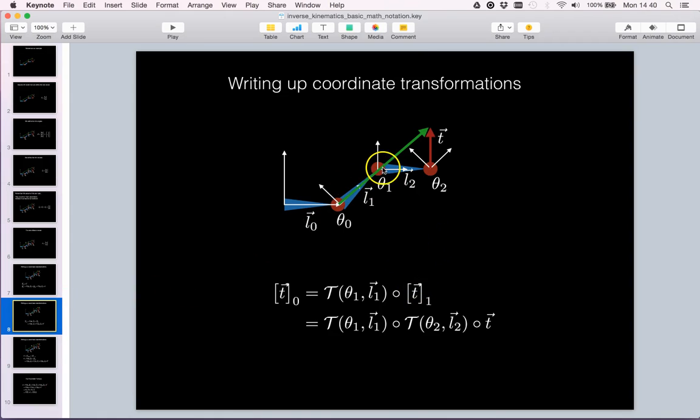Now we know T with respect to link frame 1 and we can transform that into link frame 0. So this is shown here. We know T in link frame 1, we will apply the transformation given by L1 and theta 1 to get T with respect to link frame 0.